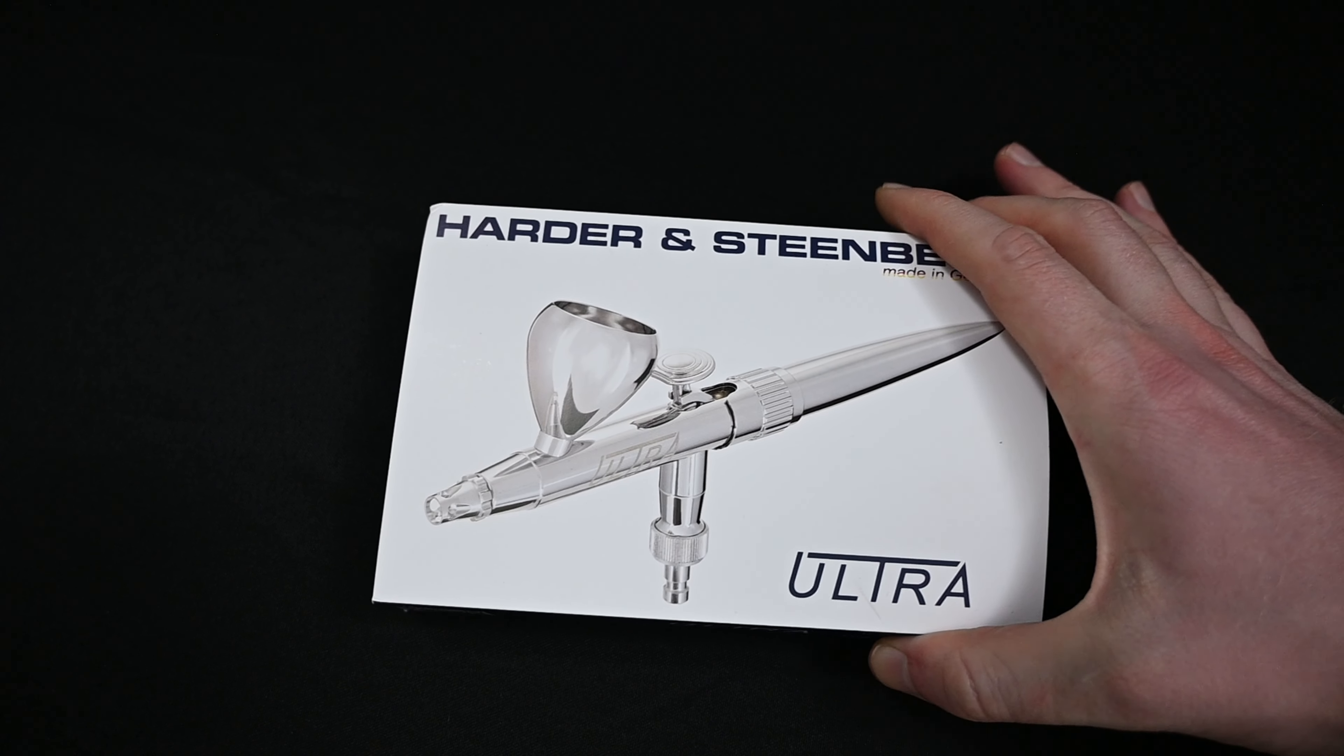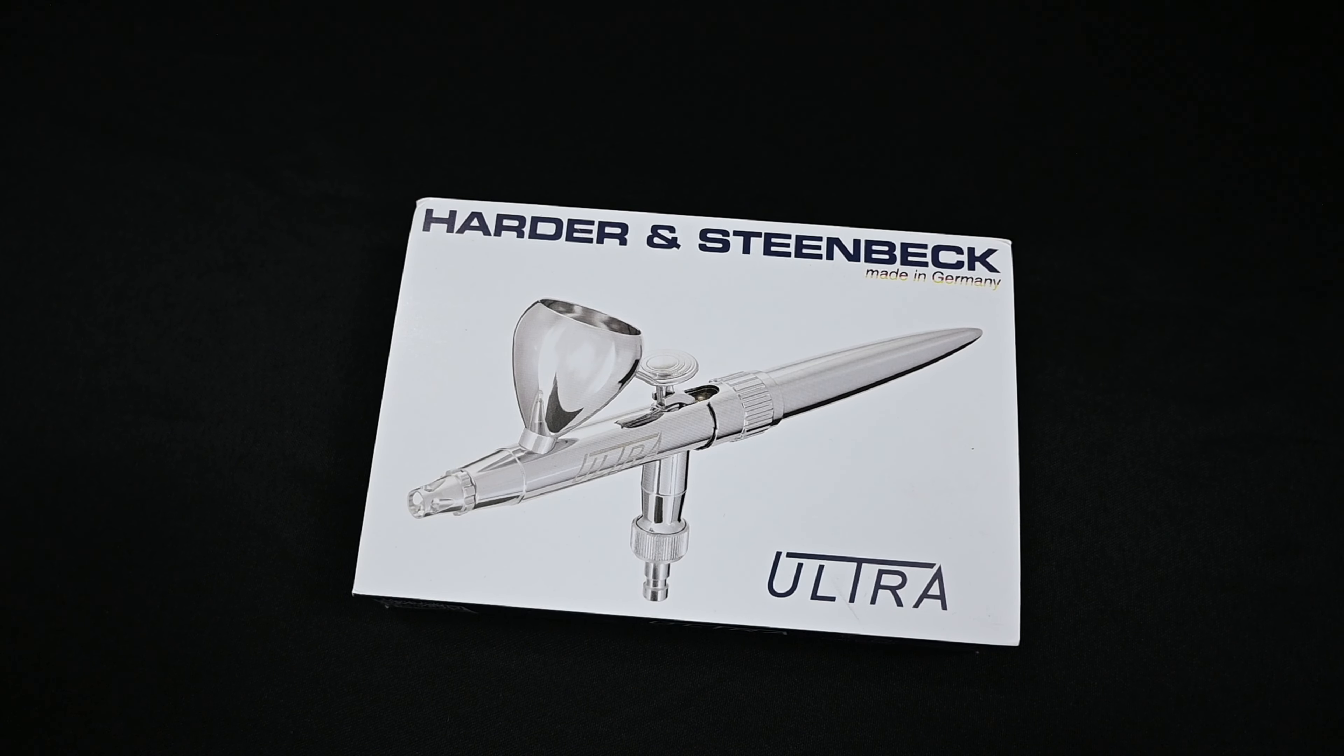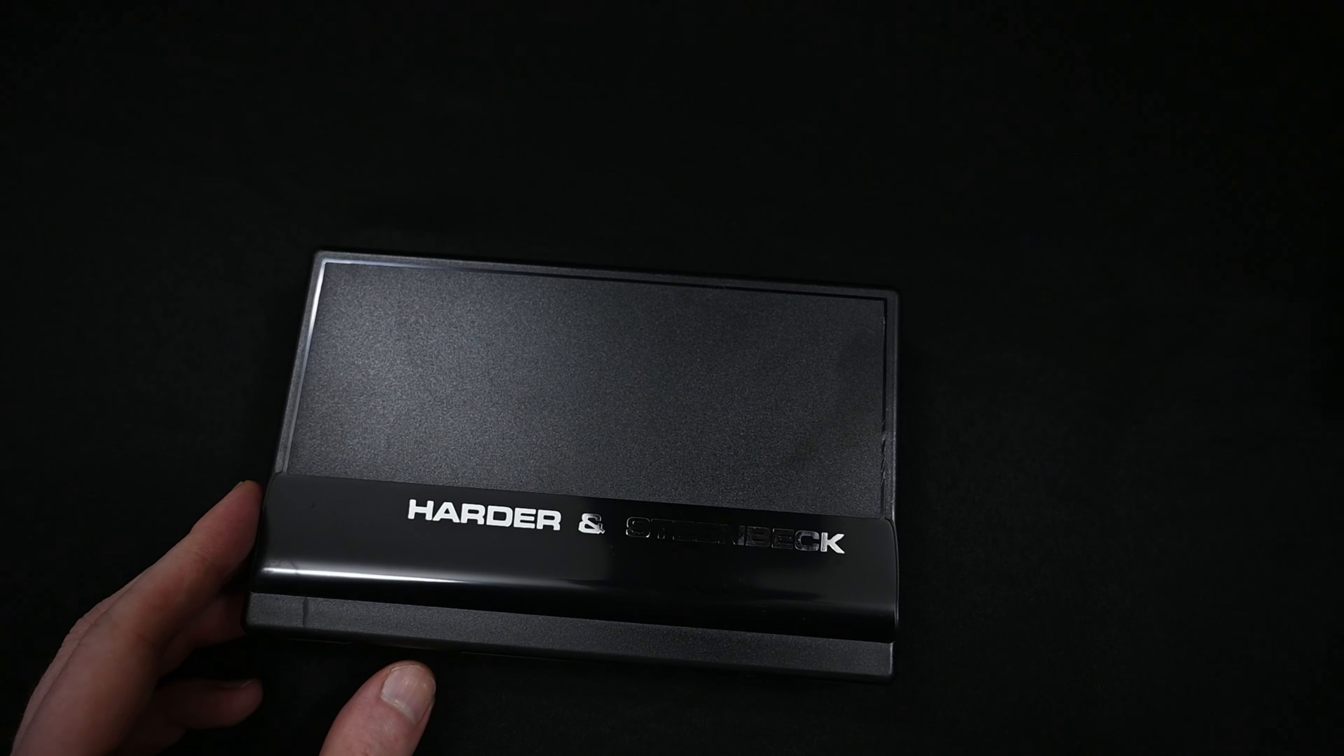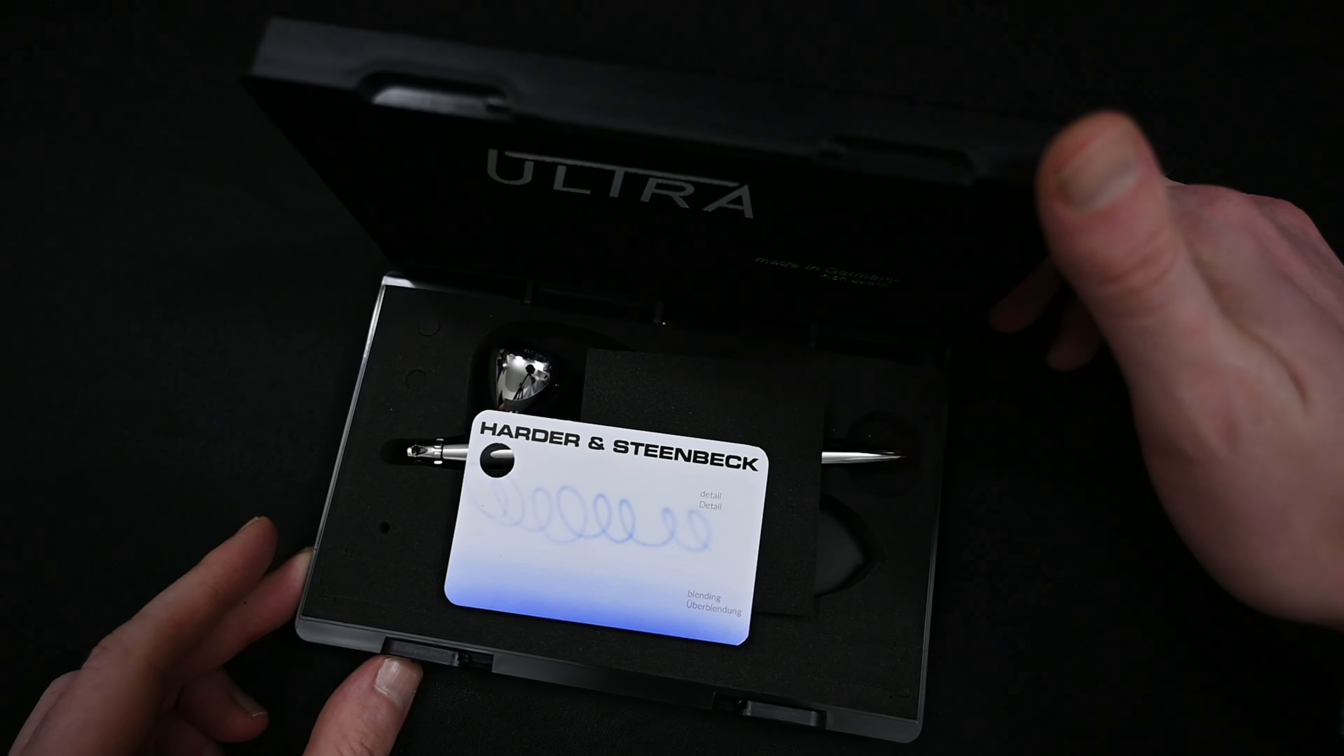I ordered the Ultra 2024 directly from Harder & Steenback. I paid $99 for it, and it was shipped directly from Germany. It came packaged in this very nice plastic box. It's the standard one that you get with all Harder & Steenback airbrushes.